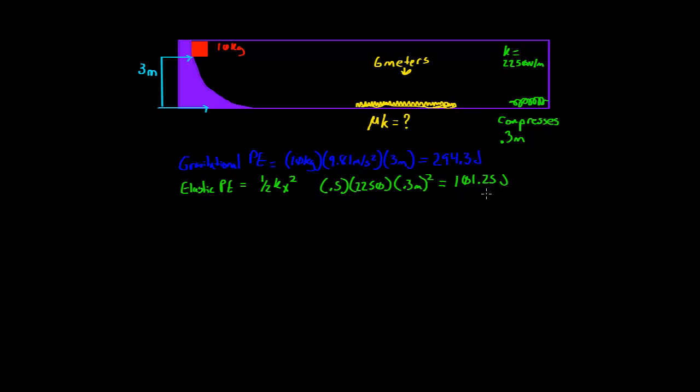So the block slides through. Now up here, it started with 294.3 joules. After it slides through this little rough patch and compresses this little spring, it's only left with 101.25. So this kinetic friction, or this path right here, ate up a lot of our energy. So let's figure out how much.